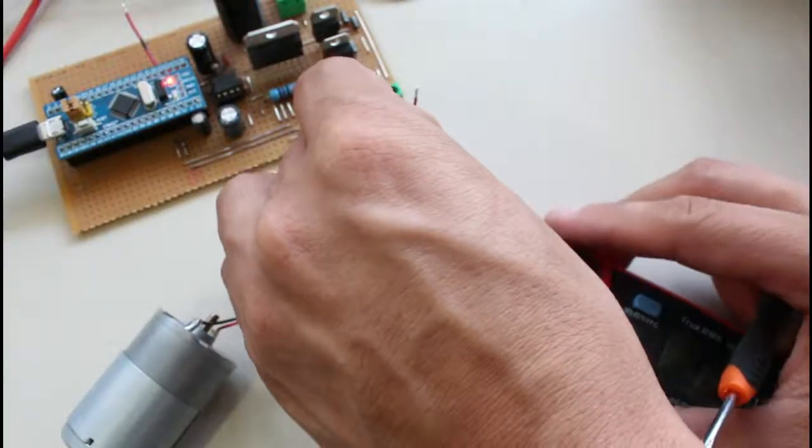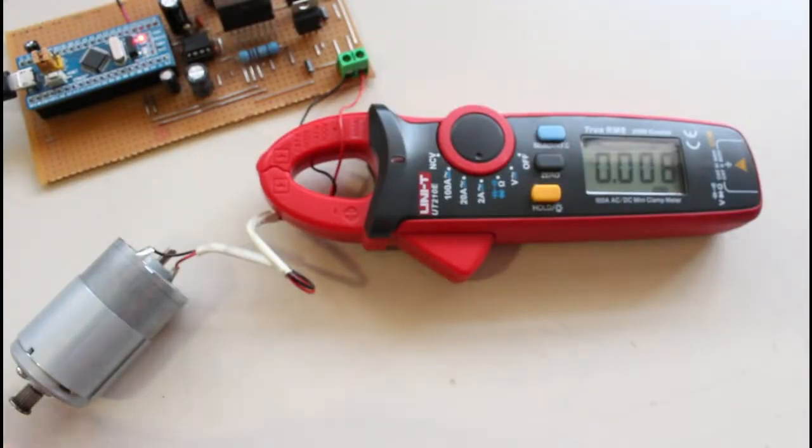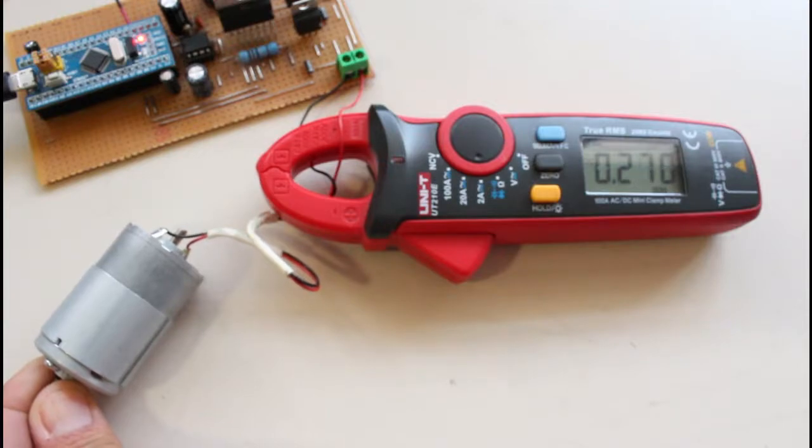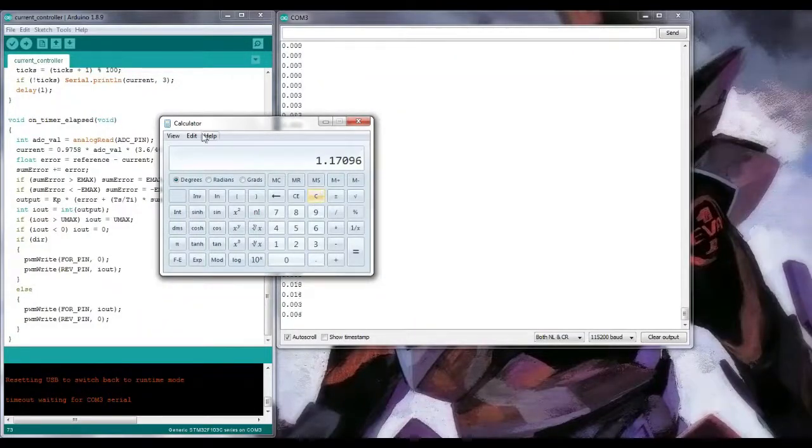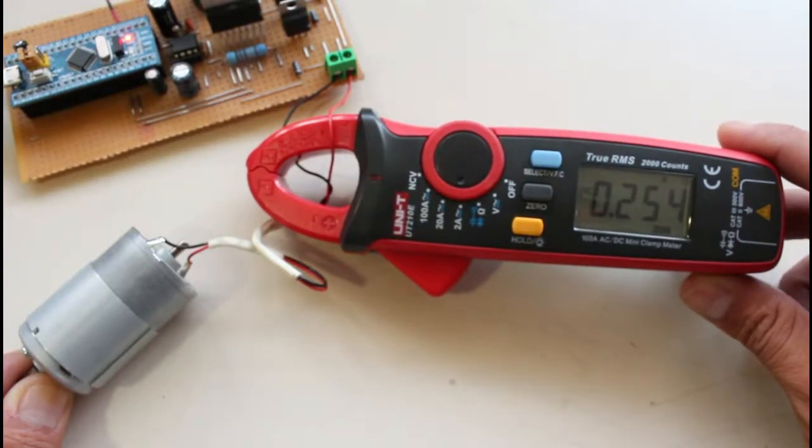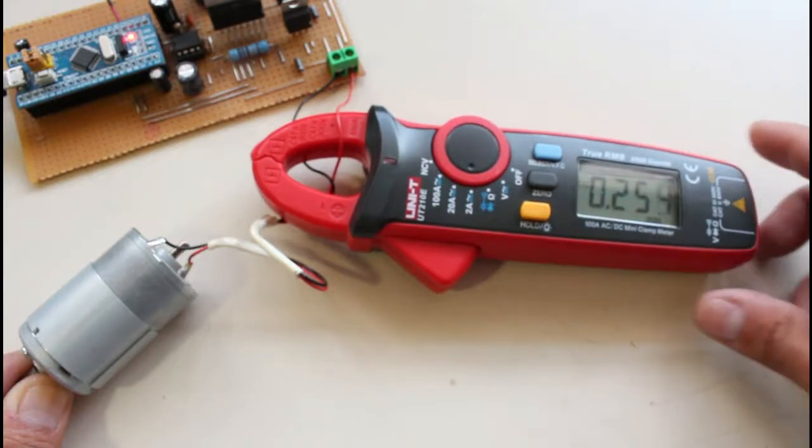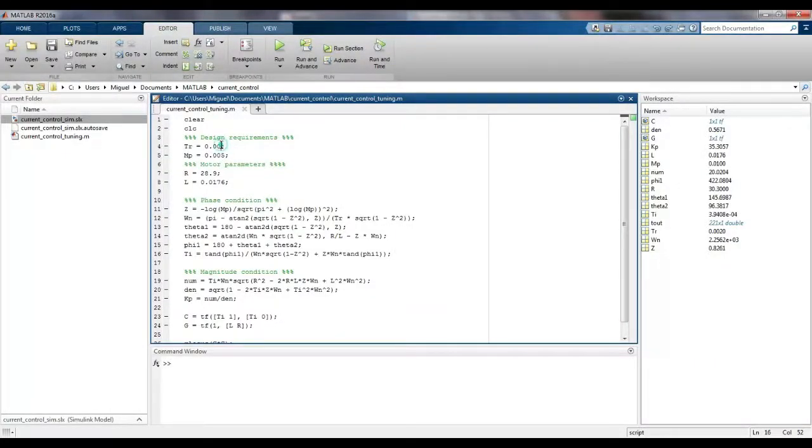Finally, I program the microcontroller and power up the system. The first test shows me that the ADC input does not correspond to the real current, so I have to tune a little bit the equation. Now the current in steady state is correct, but the interesting part lies in the transient response. I change the design requirements and compute the control parameters.